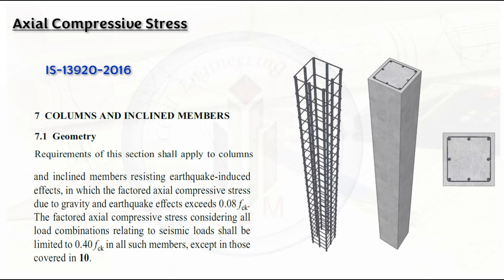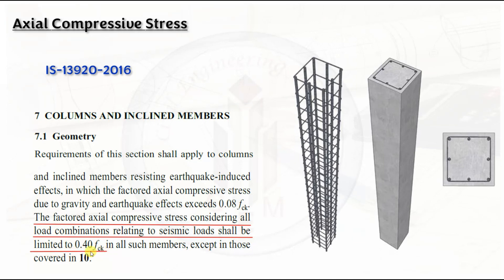As per IS 13920, Clause 7.1, the factored axial compressive stress considering all load combinations relating to seismic load shall be limited to 0.4·fck in all such members, except those covered in Clause 10. Here fck is the compressive strength of concrete, so the limiting value is 0.4·fck.